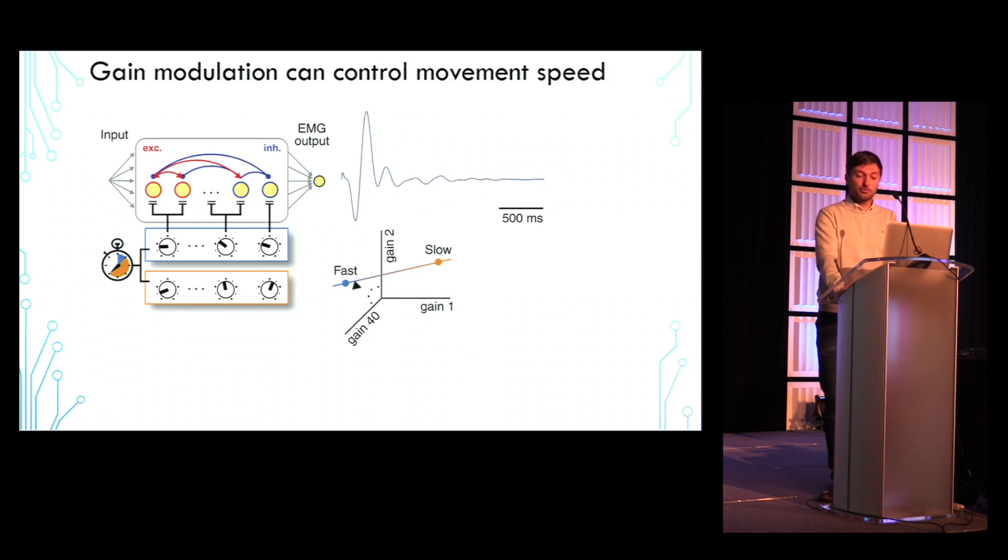In other words, to control movement speed, we learn a manifold in neuronal gain space that is delimited by the fast and slow gain patterns.